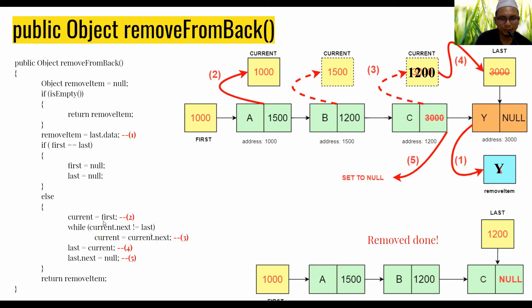To find the second last node, we start by assigning first to current. This method uses all three data members of the LinkedList class — first, current, and last. We need current to traverse and find the second last node.